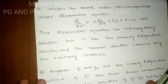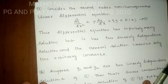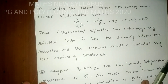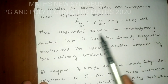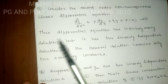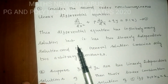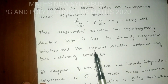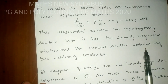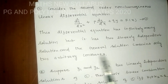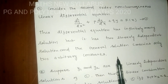Consider the second-order non-homogeneous linear differential equation: d²y/dx² + p·(dy/dx) + q·y = f(x). This differential equation has infinitely many solutions, but it has two linearly independent solutions, and the general solution contains only two arbitrary constants.